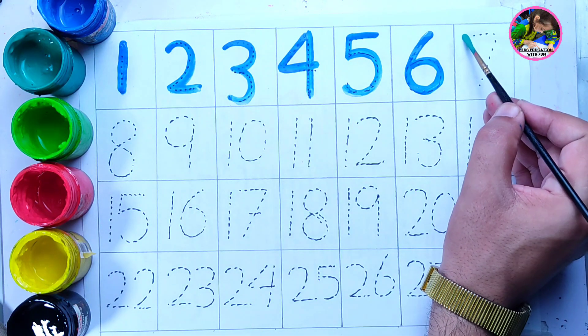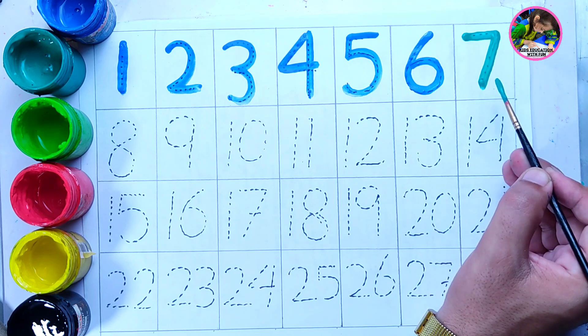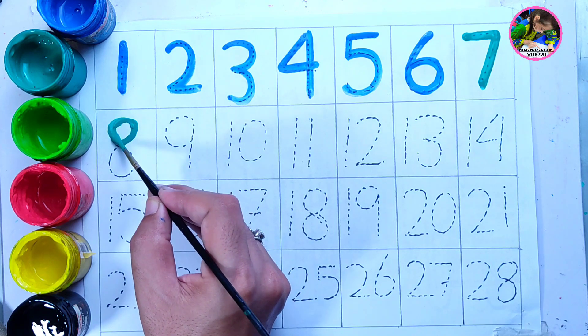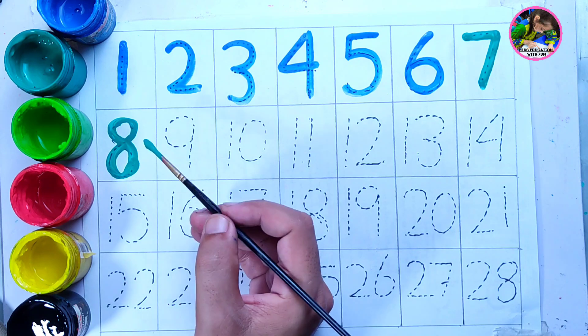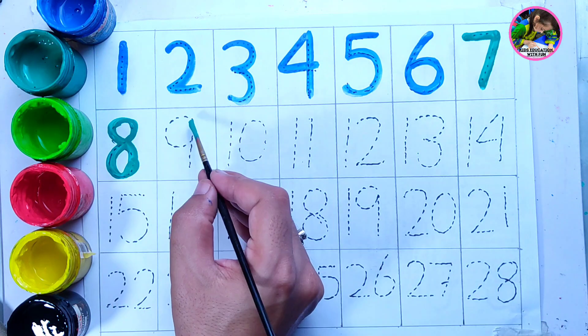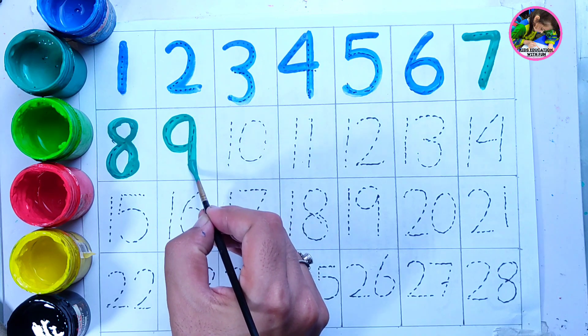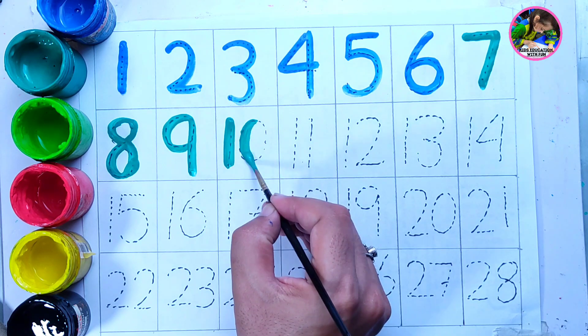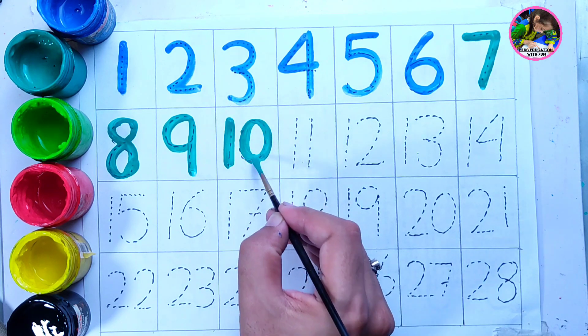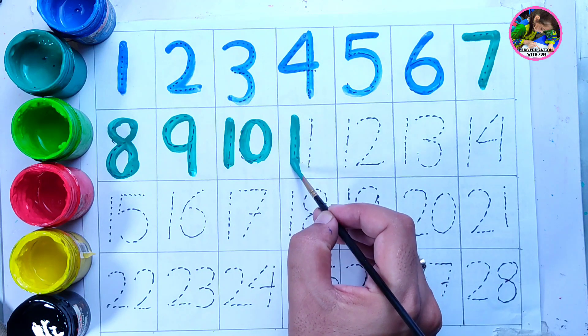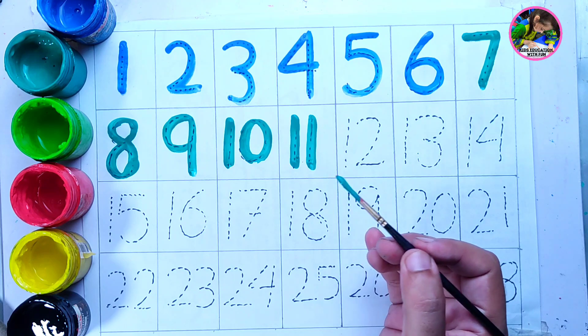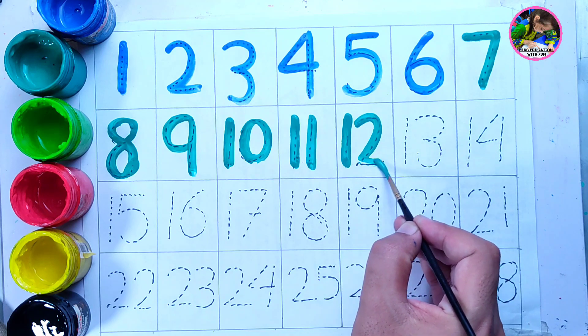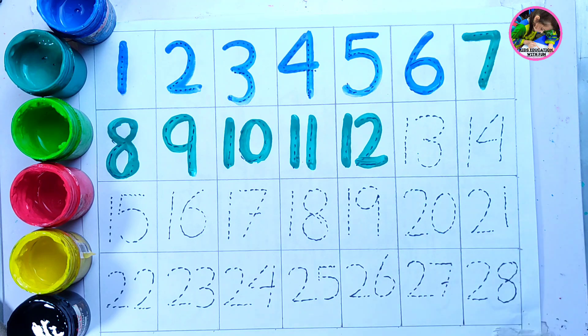This is dark green color. Number 7, this is number 7. Number 8, 9, number 10, 11, and 12, this is number 12.